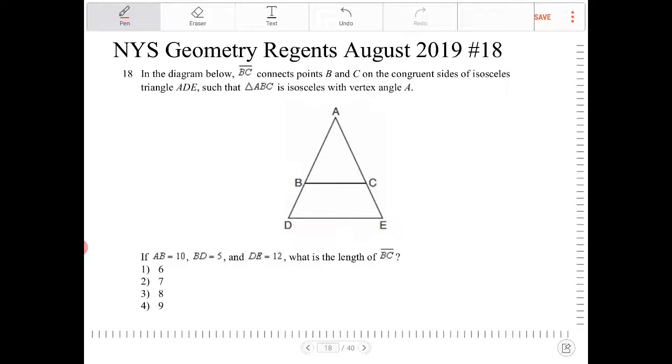So angle A is the vertex of both triangle ABC and triangle ADE, and both triangles share this angle. Side length AB is congruent to side length AC, as the description is telling us.